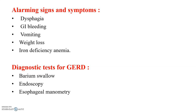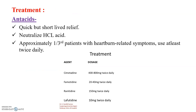Now the next part is the treatment, which is a very essential part. The drugs used in the treatment of GERD — the first class is antacids. We need to control the acid production, so antacids are very useful as they neutralize HCl acid. Approximately one third of patients with heartburn-related symptoms use antacids at least twice daily. Some of the drugs used in GERD are cimetidine, famotidine, ranitidine, and lafutidine.